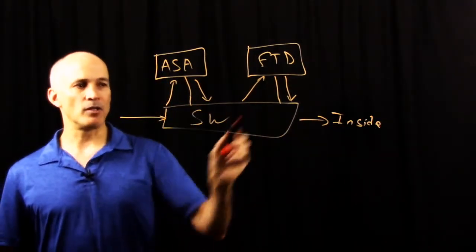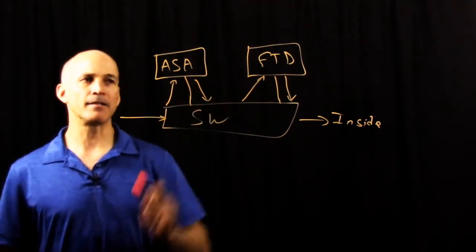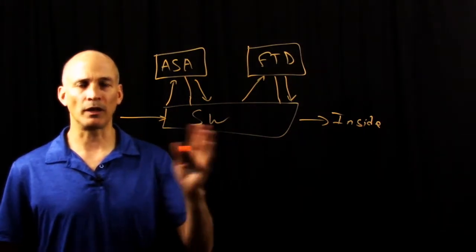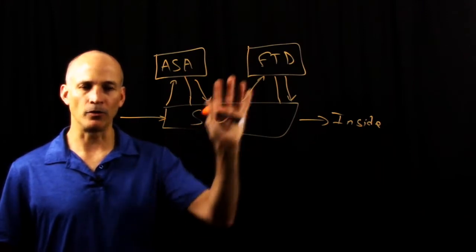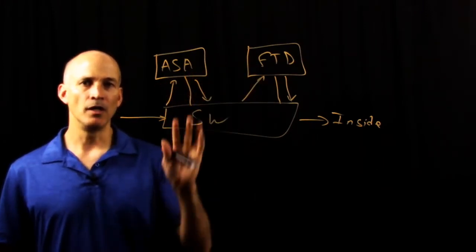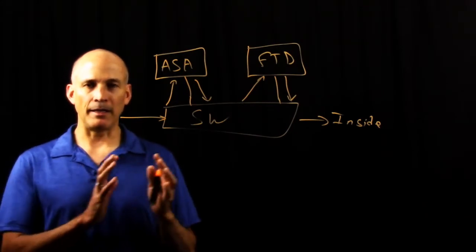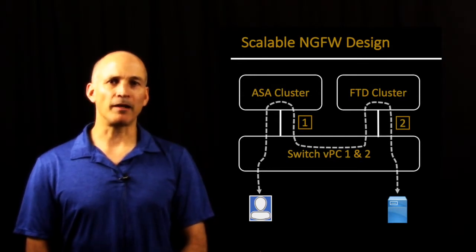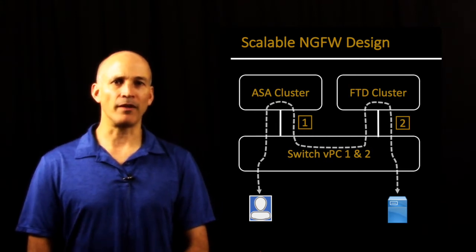I mentioned some of the pros here. The independence of the clusters gives us fault-tolerance, resilience, so one cluster doesn't impact the other in terms of flows and failures of any device inside the cluster. There's also the fact that it's independent, so we can scale each out to the needs that we require. Here's the scalable NGFW design with the packet flow through the switch, through the ASA cluster, followed by the FTD cluster and off to the inside.